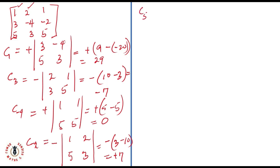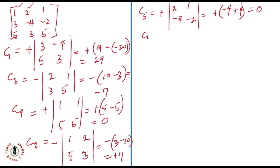Now for the last row. C₃₁ — element 5 — is positive. Picking 2, 1, minus 4, and minus 2: C₃₁ = plus [(2)(−2) − (1)(−4)] = plus [−4 + 4] = 0. The next item is C₃₂ — sign is negative. Picking 1, 3, 1, and minus 2: C₃₂ = minus [(1)(−2) − (1)(3)] = minus [−2 − 3] = plus 5.